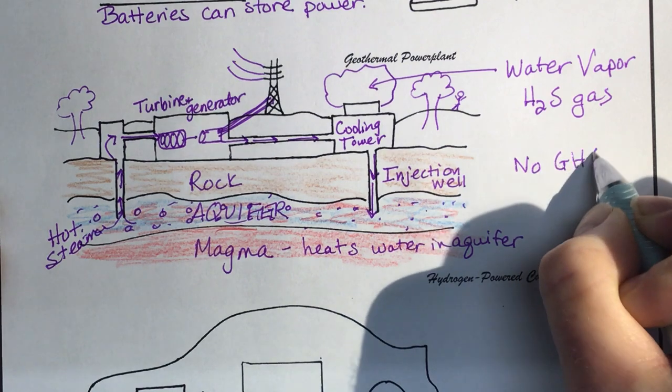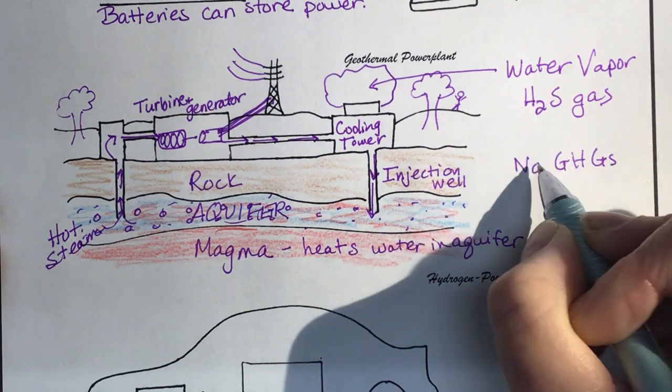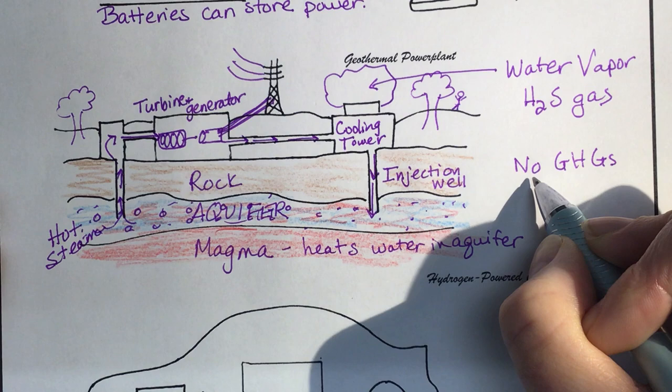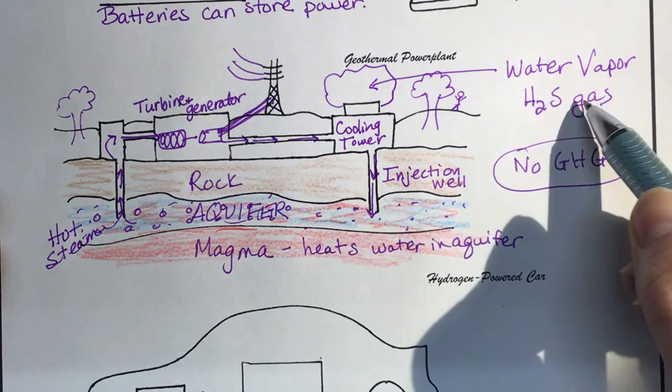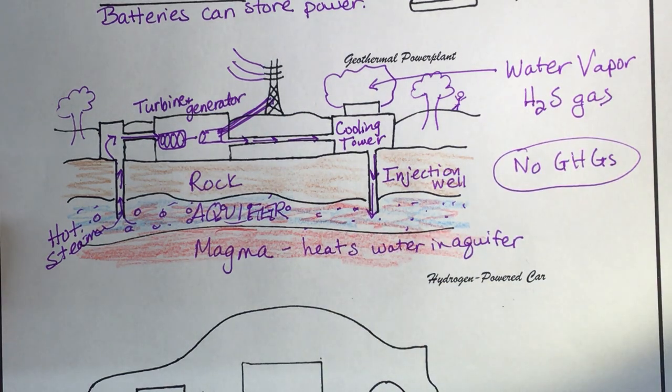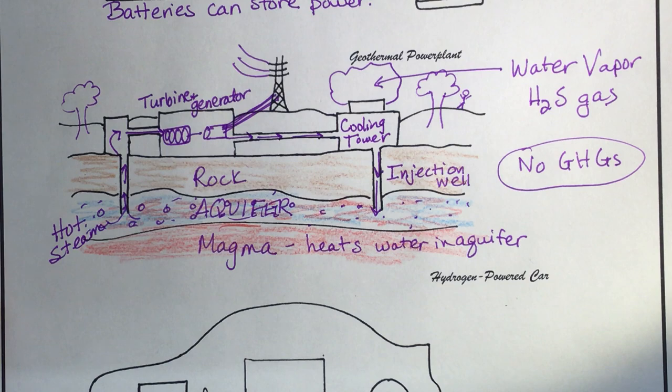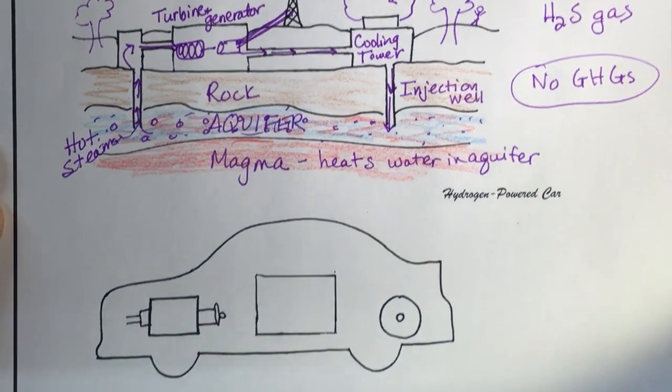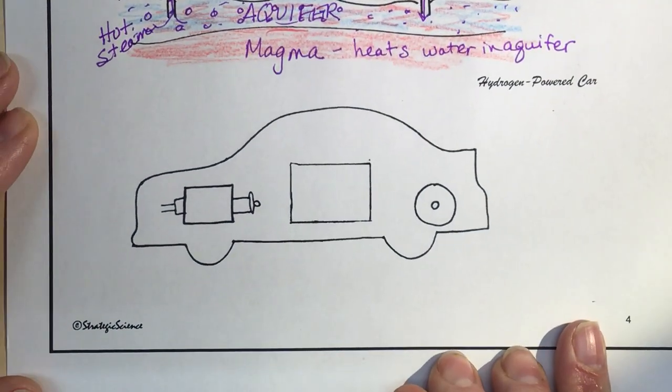So here there is no greenhouse gases, so it's very eco-friendly that way. And the only air pollutant is H2S gas, and that's not very much. Again they can mostly get rid of that with scrubbers. So it's very eco-friendly but again it can only be used in certain places on the planet.